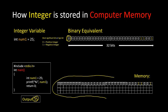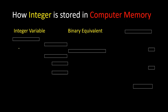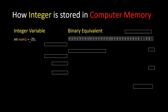Now let's talk about how a computer stores a negative integer. If we have this variable int number one equals to minus 25, how will the computer store it in memory and how does the computer detect this is a negative integer? If we convert 25 into binary it will look like this, but the most significant bit is still 0. For that, we have to understand the concept of two's complement.